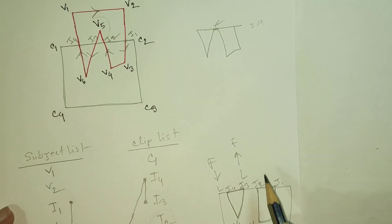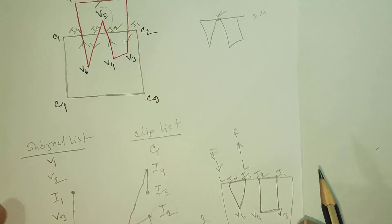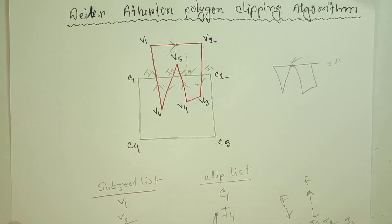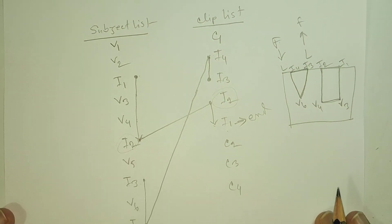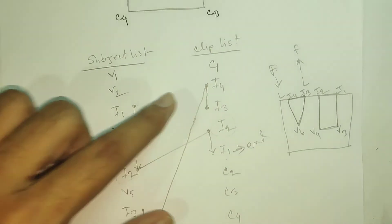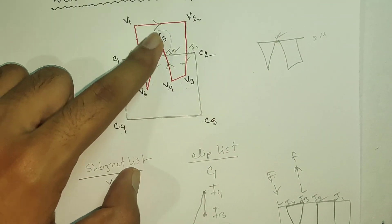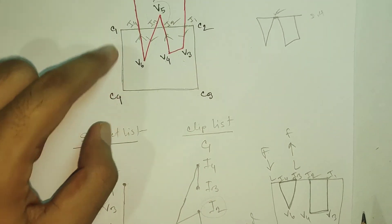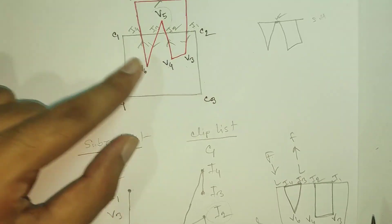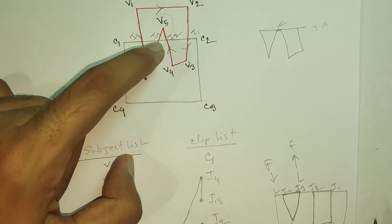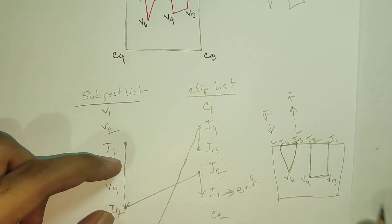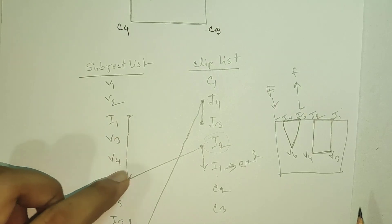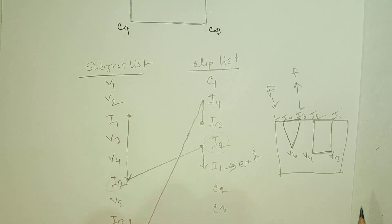So this is the clipping method — this is the Weiler-Atherton polygon clipping algorithm. We will see the characteristics we are monitoring. The most important concept is the subject list and the clip list. The subject list contains the vertices and intersection points that are part of the polygon equation. The first step is to correctly identify intersecting points, and the second step is to make clear what each intersecting point is.